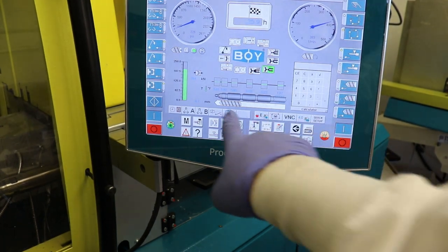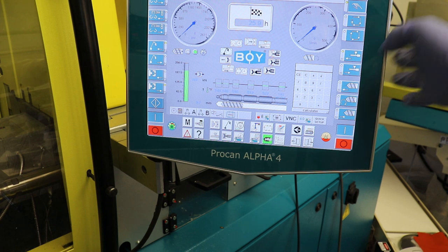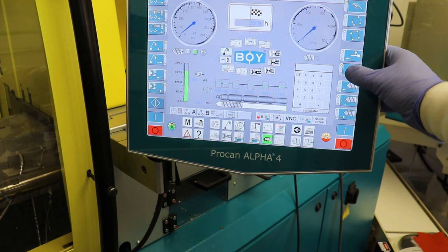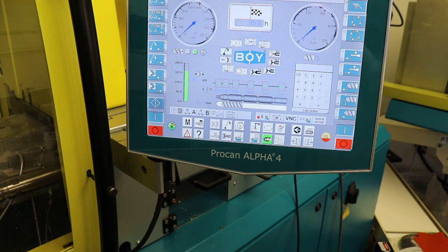You can see how the auger stopped moving on the depiction, so we will go to manual mode and then I will back out the injection unit and then we will load our new plastic, the polypropylene.